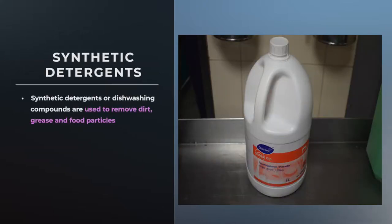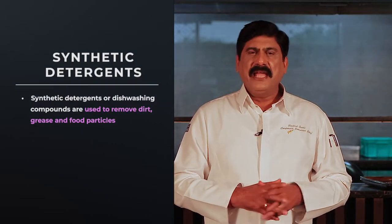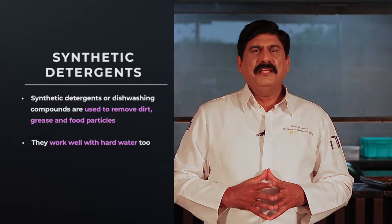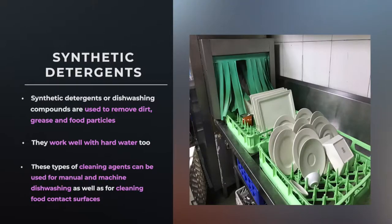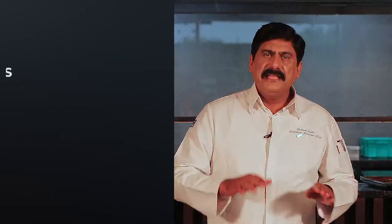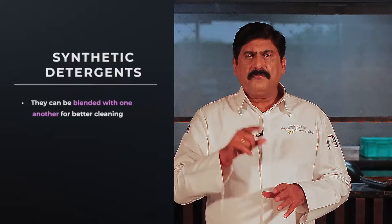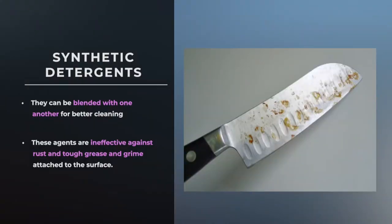Synthetic detergents or dishwashing compounds work well at removing dirt, grease, and food particles. They work well with hard water too. These types of cleaning agents can be used for manual and machine dishwashing as well as for cleaning food contact surfaces. They can be blended with one another for better cleaning. However, these agents are ineffective against rust and tough grease and grime attached to the surface.